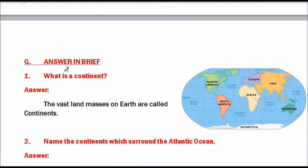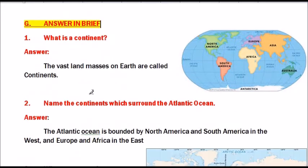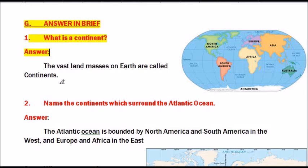Moving to question G: Answer in brief. Question 1: What is a continent? The vast landmasses on earth are called continents. Examples include Africa, Asia, Europe, Antarctica, etc.